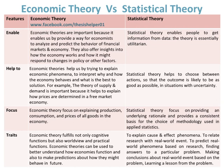Economic theories help us by trying to explain economic phenomena, to interpret why and how the economy behaves and what is the best solution. For example, the theory of supply and demand is important because it helps to explain how prices are determined in a free market economy. Whereas, statistical theory helps to choose between actions so that the outcome is likely to be as good as possible in situations with uncertainty.